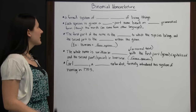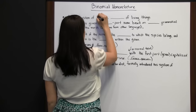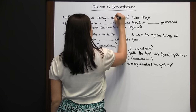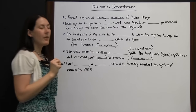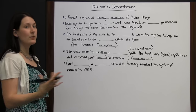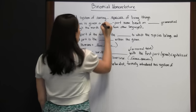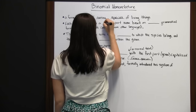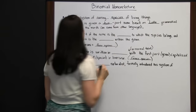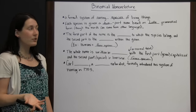Binomial Nomenclature is a formal system of naming species of living things. It helps keep all the different species organized and is used throughout the world. Each species is given a two-part name based on Latin grammatical form, though the words can come from other languages — many also have Greek roots.